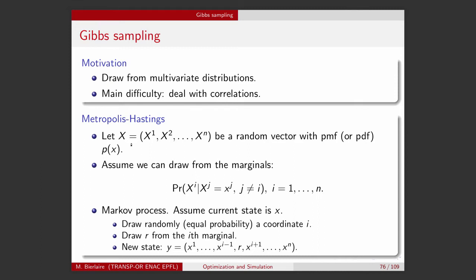So here, I denote by capital X a random vector of dimension n, and the PMF, the probability mass function, or the PDF, it does not matter if it is discrete or continuous, is P of X.